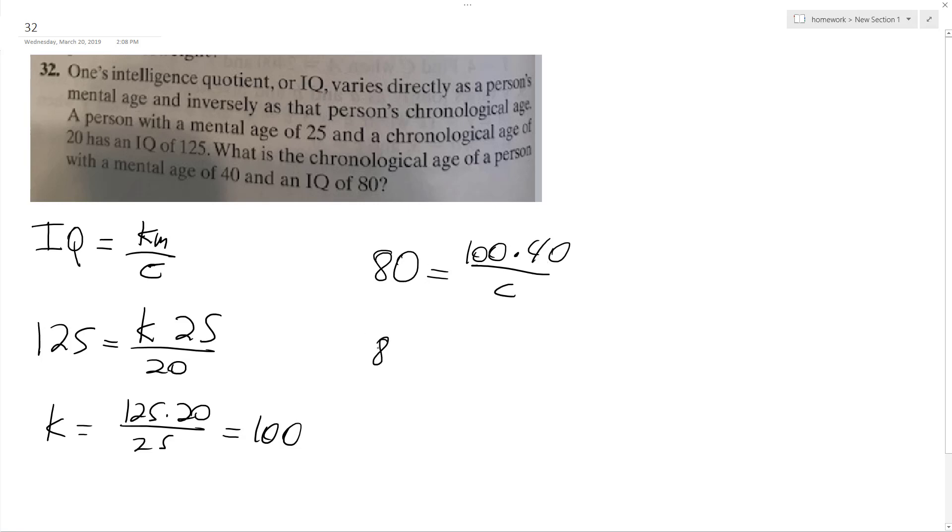Okay, so 80C equals 4,000, divide through by 80. We've got a person here who's got a chronological age of 50 years.